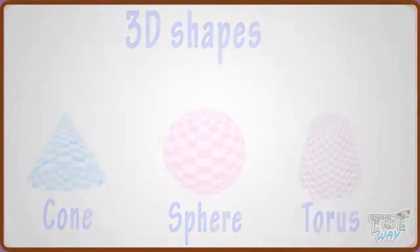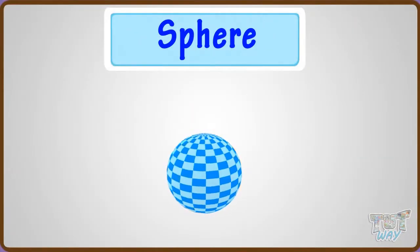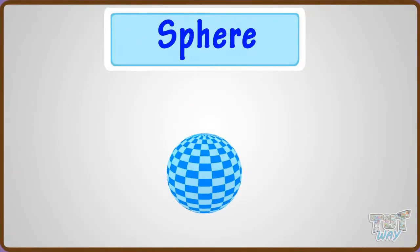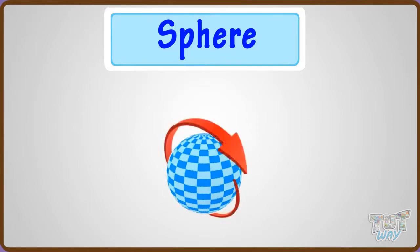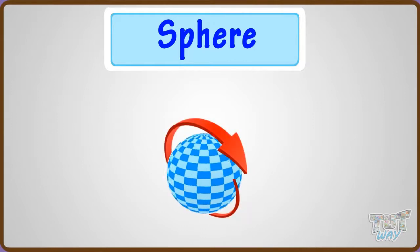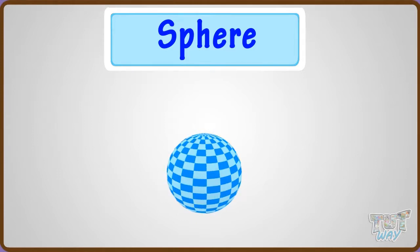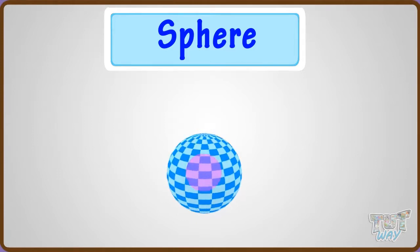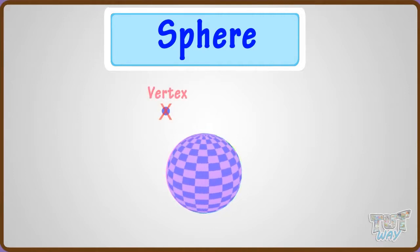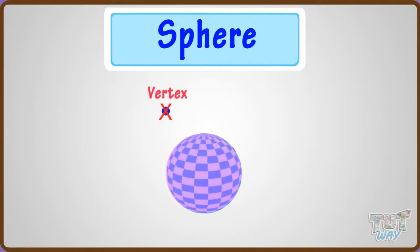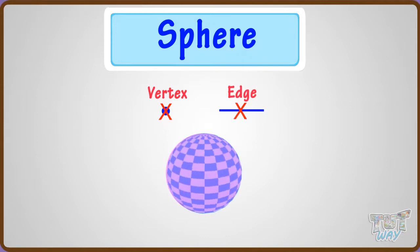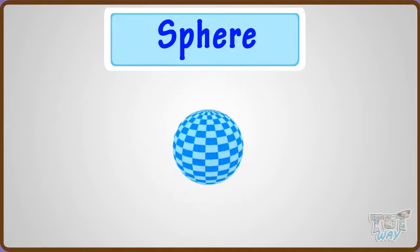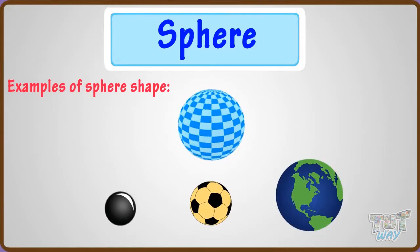Let us start with a sphere. A sphere is a perfectly round and circular 3D shape that resembles the shape of a completely round ball. It has only one face, which is spherical, and it has no vertex and edge. These are a few objects spherical in shape.